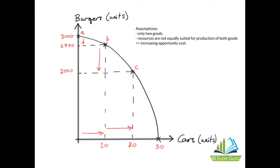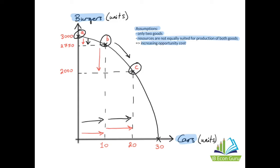This is the more common PPC you will see in most economics courses and textbooks — the PPC with increasing opportunity cost. The assumptions are that there are only two goods: burgers on the y-axis and cars on the x-axis, and resources are not equally suited for the production of both goods. Moving from point A to point B, increasing car production by 10 units, the economy sacrifices about 250 burgers. Moving from point B to point C, increasing car production by another 10 units, the economy sacrifices about 750 burgers.